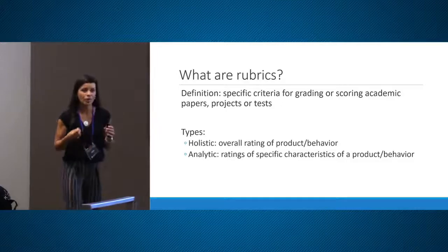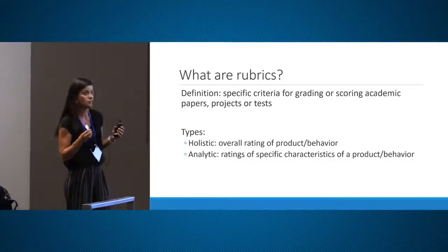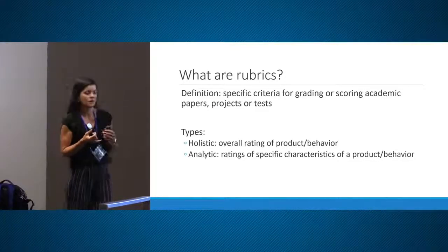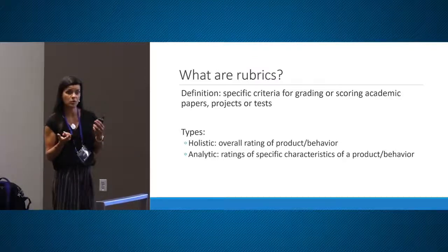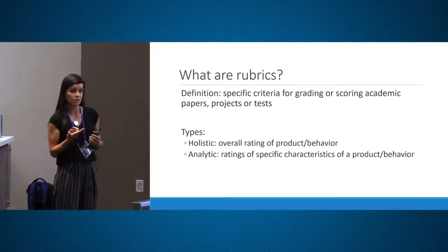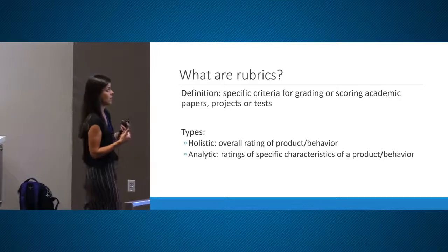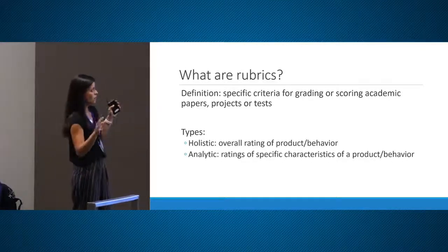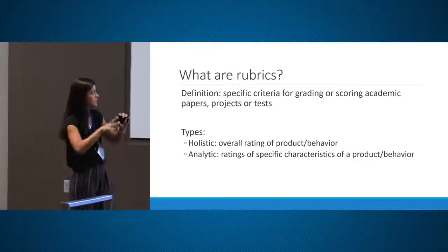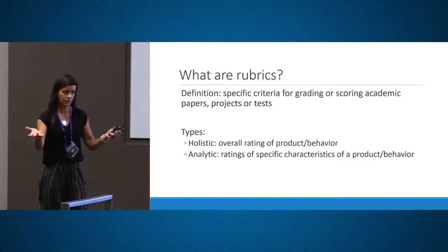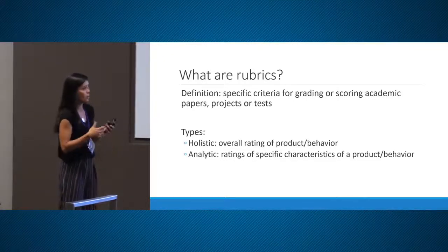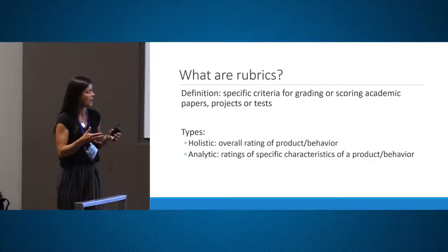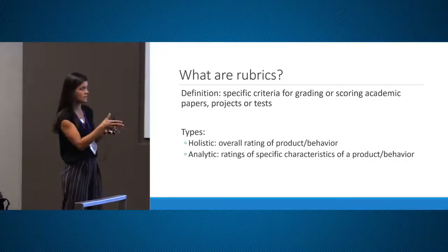So what are rubrics? Rubrics are specific criteria that you establish to grade or score assignments. Those can be papers, projects, exams. There are mainly two types of rubrics. There is the holistic rubric that assesses the overall quality of the product the student turned in, and there is the analytic rubric that is a rating of specific characteristics of that product.